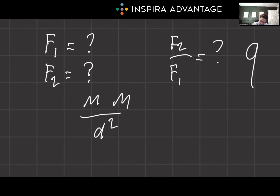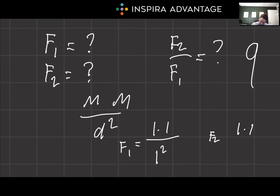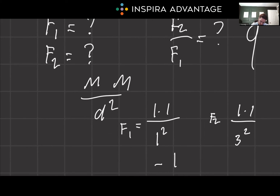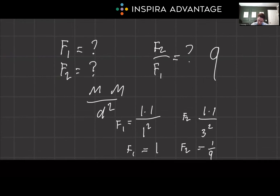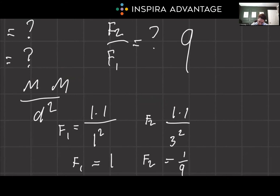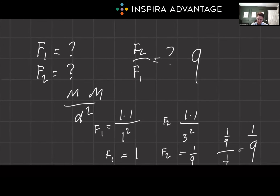Great numbers to use are ones. So F1: mass of one times mass of one, one meter squared away — equals one. For F2, we still have the same masses, one times one, but we triple that distance, so that's three squared equals nine in the denominator. F2 equals one over nine. Comparing the two: F2 divided by F1 is one-ninth divided by one, which equals one-ninth. The gravitational force is reduced by a factor of nine.